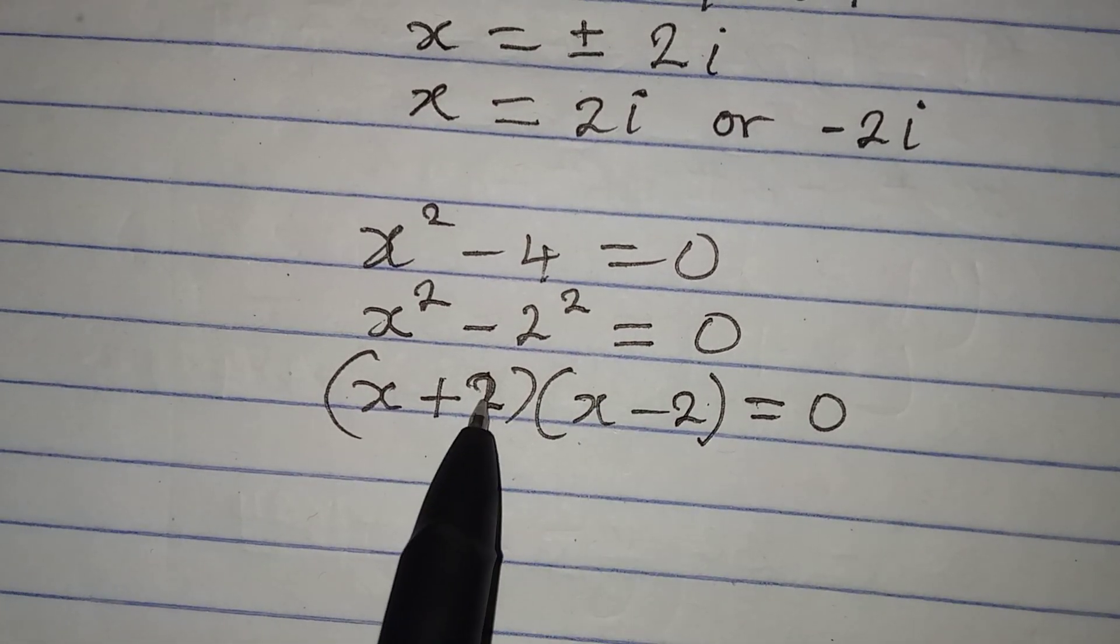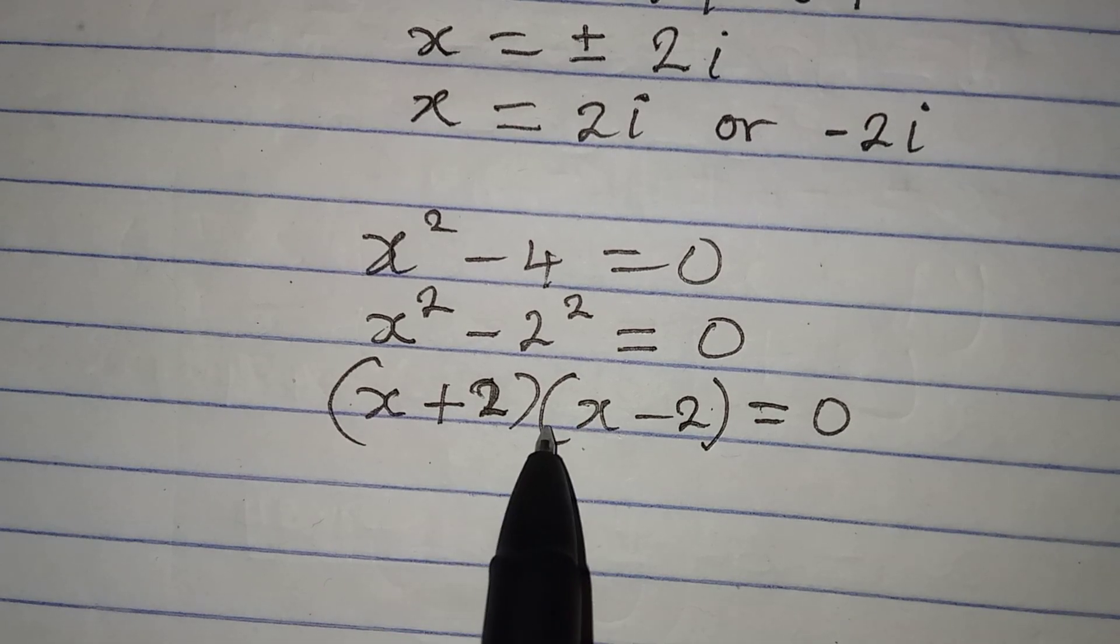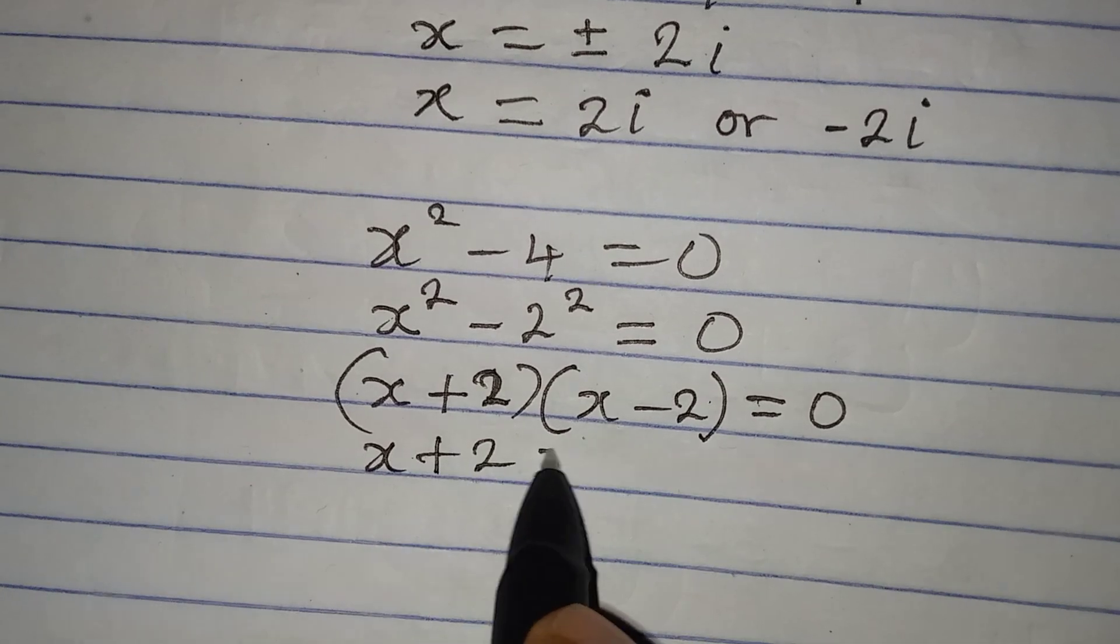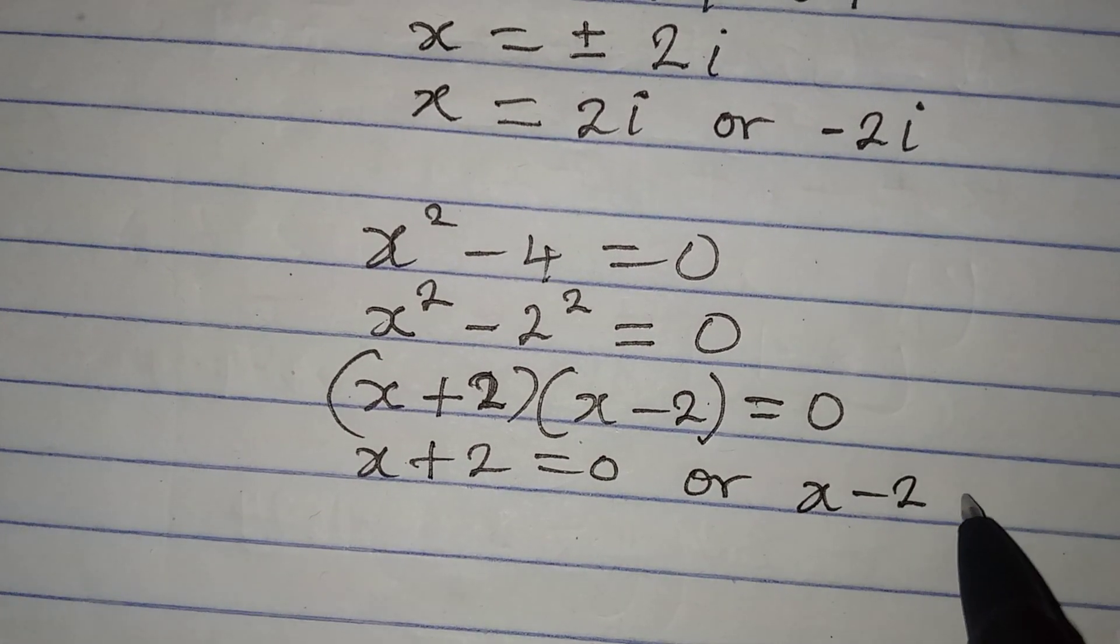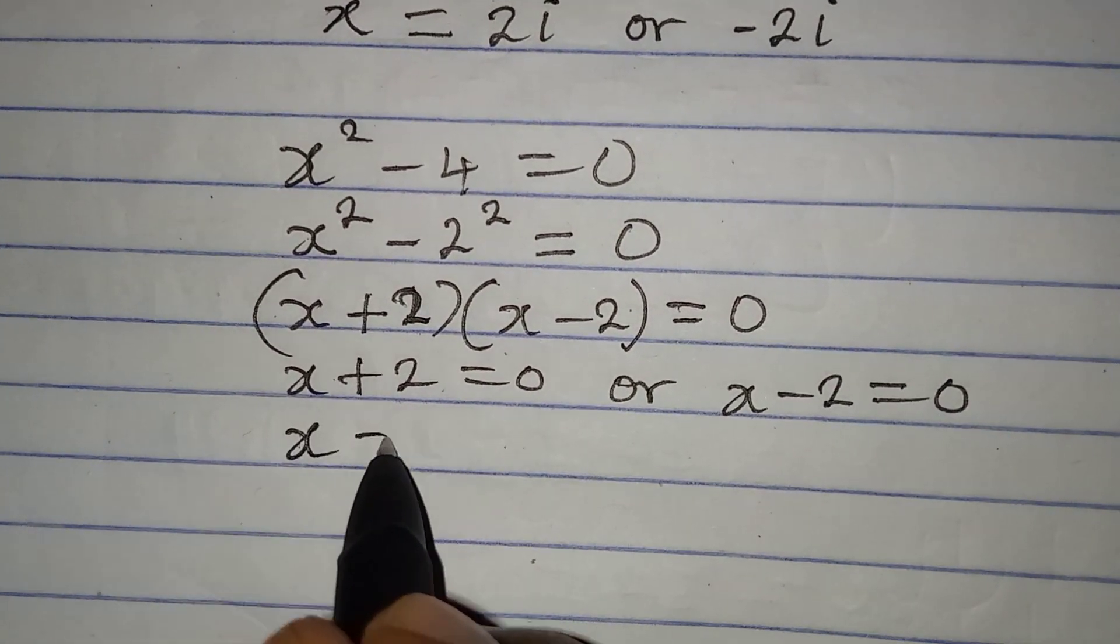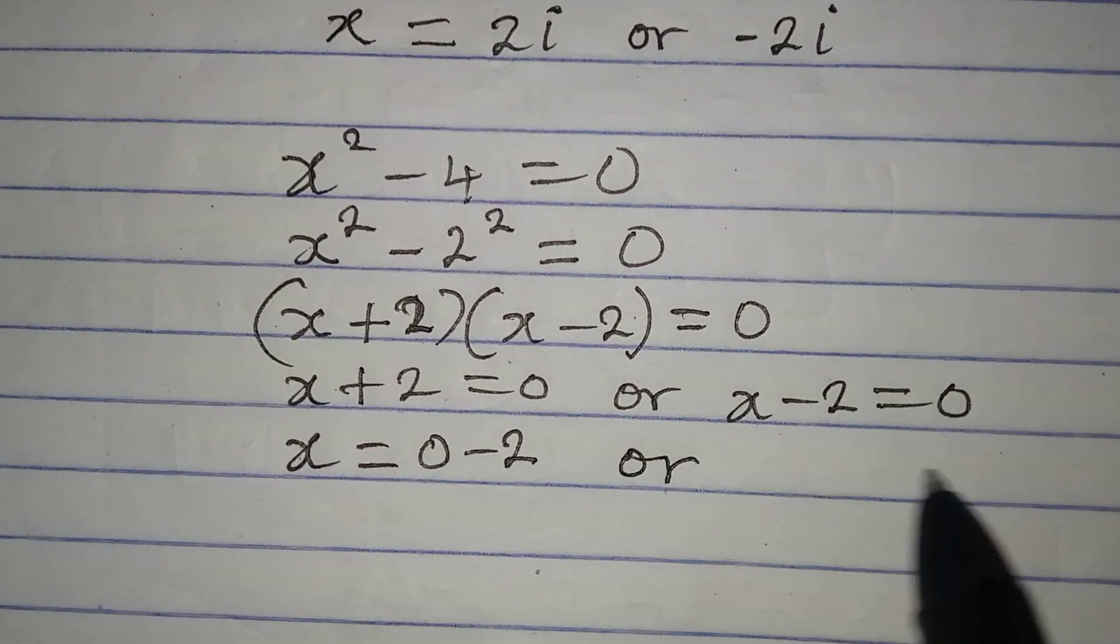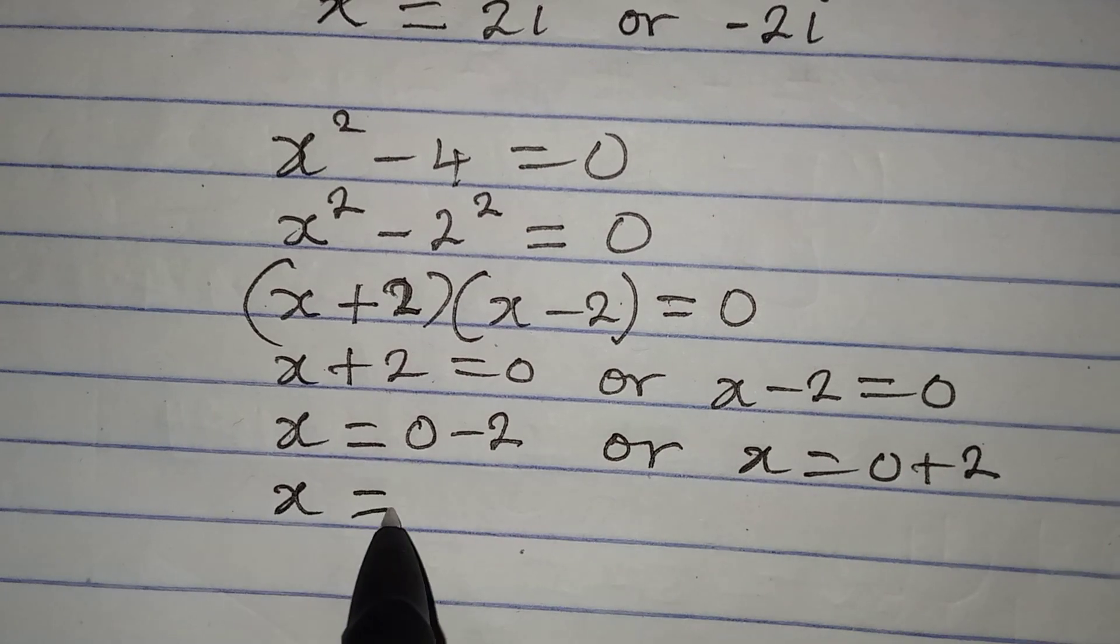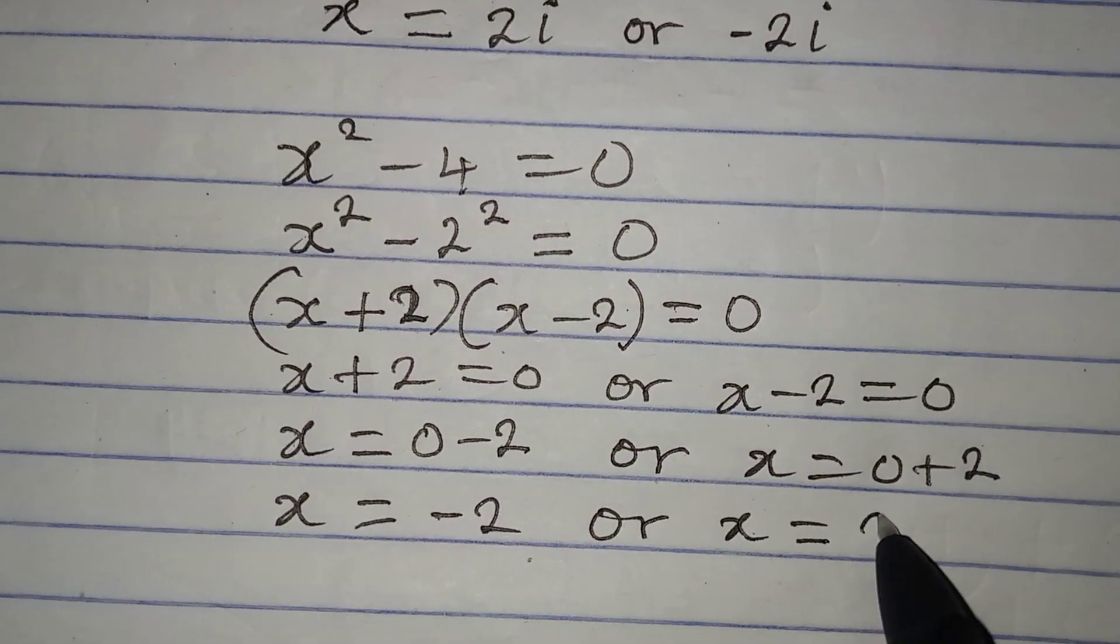Then if I continue, I will apply zero product rule, meaning that either of them should be equated to 0. So x plus 2 is equal to 0 or x minus 2 is equal to 0. And then x is equal to 0 minus 2 from here, or on this side x will be equal to 0 plus 2. Now x is equal to minus 2 or x is equal to 2.